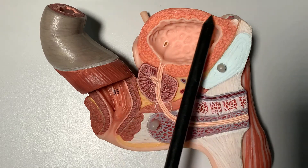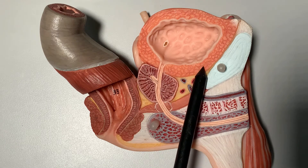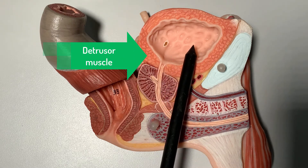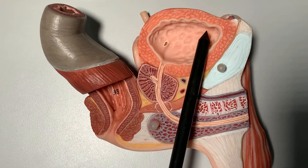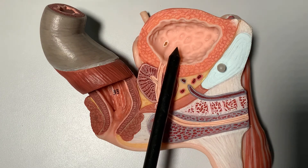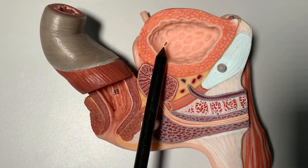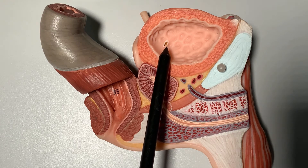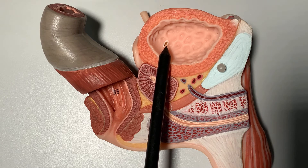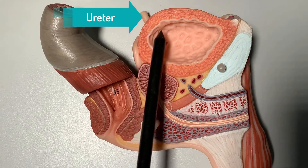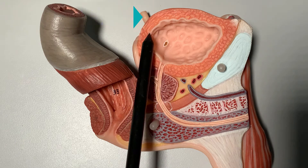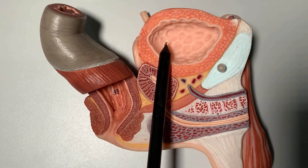Now let's focus on the urinary bladder. Look at its muscular wall which is made up of detrusor muscles, and look at the cavity. The cavity is not smooth — look at the pattern of the mucosa within this urinary bladder. This highlighted brownish structure is the ureteric orifice, and you can see the ureter opening into the wall of the urinary bladder.